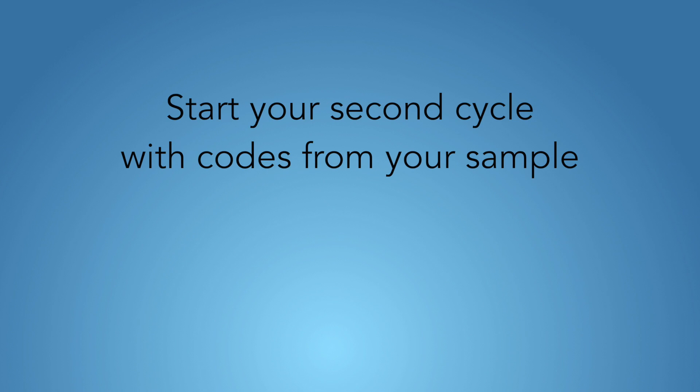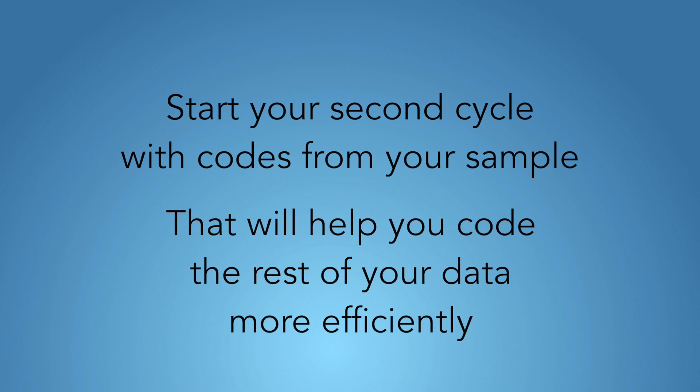You can do a sample of that first and then do a second cycle with that sample. Get an idea of what codes could be collapsed, which codes could be expanded, which codes are going to be important, which codes are not going to be important. And then use your second cycle coding process to guide you through the coding of the rest of your data, the rest of your interviews or the rest of your visual data.